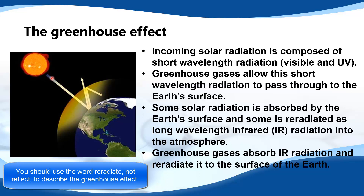So to summarize: the short wavelength radiation passes through the greenhouse gases and is absorbed by the surface of the earth. Some of this radiation is re-radiated as long wave infrared radiation into the atmosphere. And finally, the greenhouse gases in the atmosphere absorb the infrared radiation and re-radiate it down to the surface of the earth.